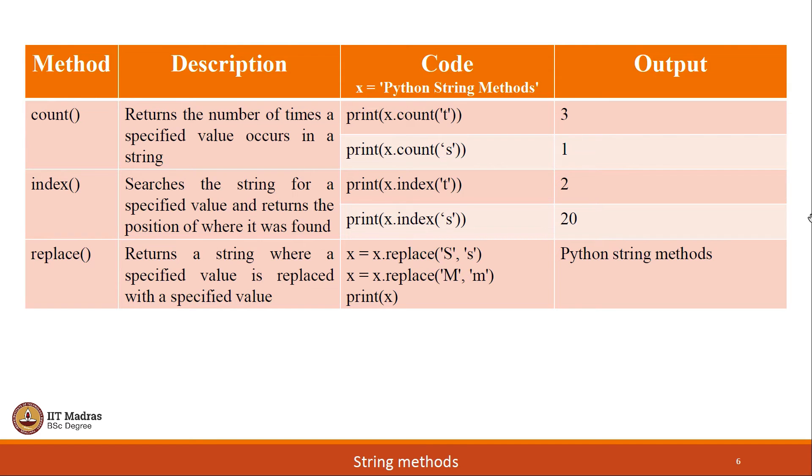Moving to next string method, which is index. It searches the string for a specified value and returns the position where it was found. The computer will start reading the string from left to right and whenever it gets that specific value first, that particular index will be written as output. As you can see, t appears 3 times in that particular string. But the first occurrence of letter t from left to right is at index 2, because we all know string index starts from 0. Similarly, index s is 20. Once again, this particular index method is case sensitive. It is displaying the index of the last s in the particular string.